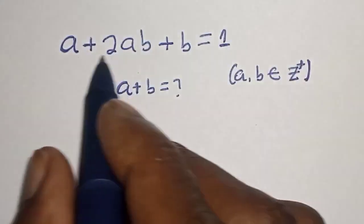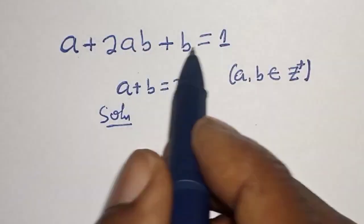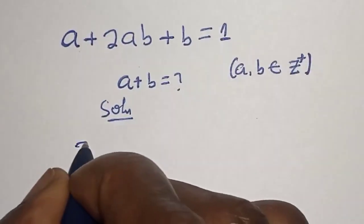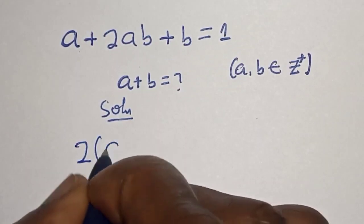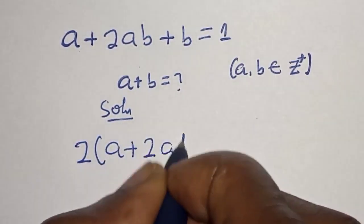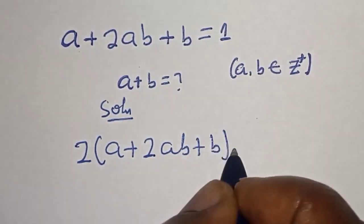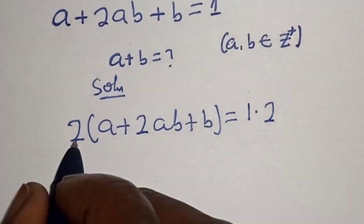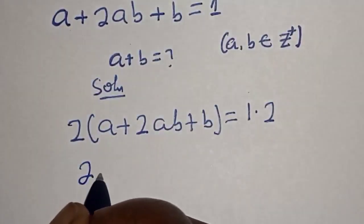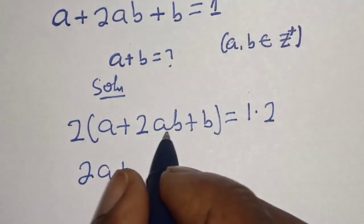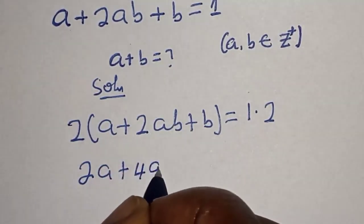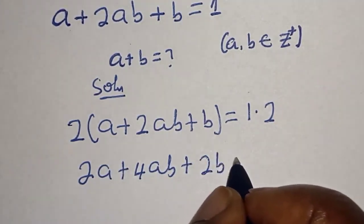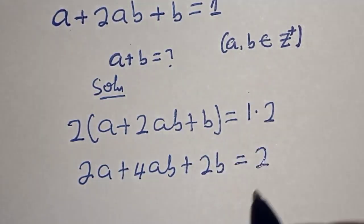We have the given equation a plus 2ab plus b is equal to 1. Let's multiply both sides by 2. That is 2 multiplied by a plus 2ab plus b is equal to 1 multiplied by 2. Then 2a plus 4ab plus 2b is equal to 2.